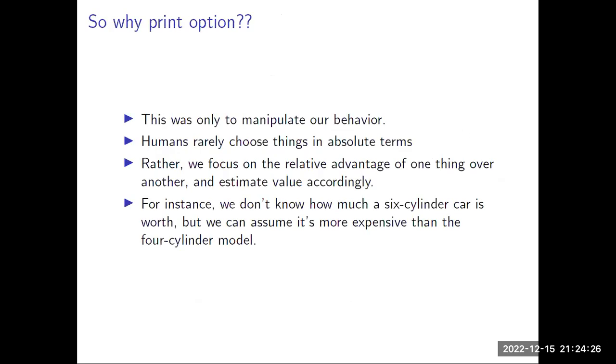This was only to manipulate our behavior. Humans rarely choose things in absolute terms. Rather, we focus on the relative advantage of one thing over another and estimate value accordingly. For instance, we don't know how much a six-cylinder car is worth, but we can assume it is more expensive than a four-cylinder car.